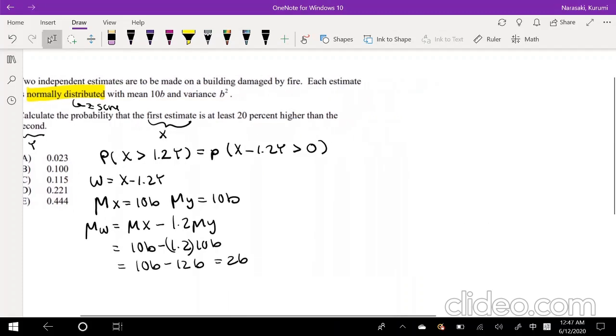Now we have to find the standard deviation. The standard deviation of X is equal to... oh no, they said the variance. Oh, perfect. That's what I wrote. And the variance of Y is equal to B squared.